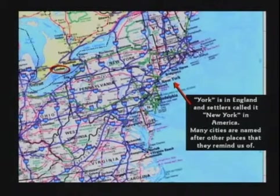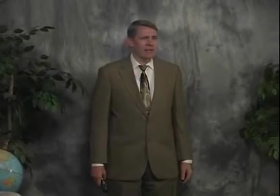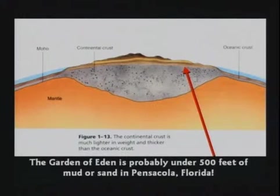There's a city in Ontario called London, and a city in America called New York, named after York — they're not the same city. When people got off the ark, they probably saw rivers that reminded them of pre-flood places and gave them the same names. The Garden of Eden is long gone. It's probably under 400 feet of mud — I suspect somewhere near Pensacola, Florida, is my personal theory on that. That world was totally destroyed.